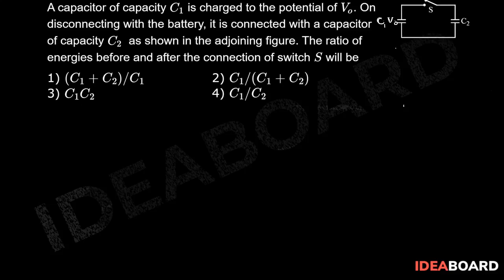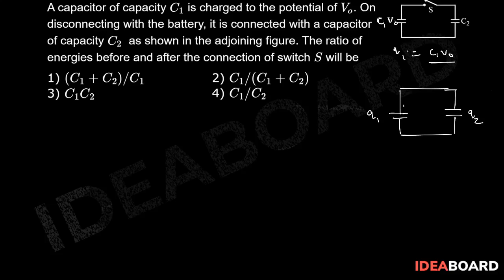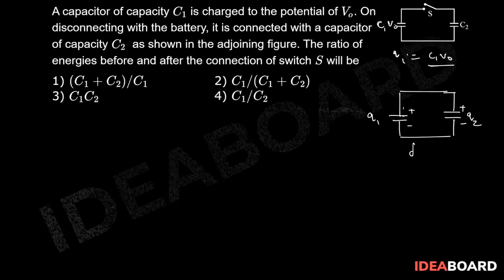The initial charge Q_initial will be C1 times V0. Now in the final condition, the switch is closed. We assume that the first capacitor has charge Q1 and the second has charge Q2, with the respective polarities. So final charges Q1 and Q2 are on both capacitors.